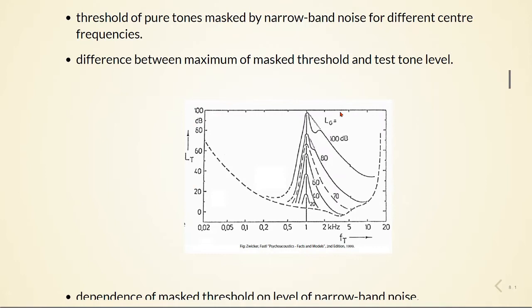In this picture now, we see the dependence of masked thresholds on the level of a noise centered at 1 kHz. Our masked thresholds show a very steep rise from low to higher frequencies before the maximum masking is reached. The slope of the rise seems to be independent of the level of the noise masker, and the maximum always is reached 3 dB below the level of the masking noise.